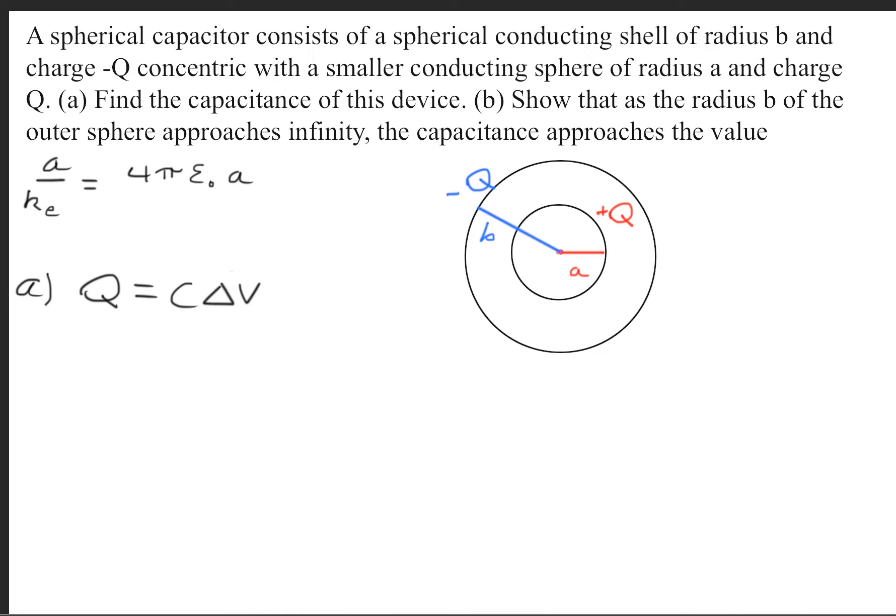There's an E-field going from positive to negative all throughout this diagram here. What this means is that we can find a potential difference. So we have ΔV = E·d.